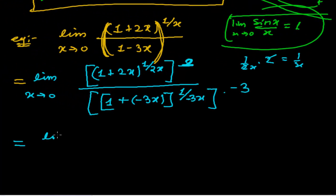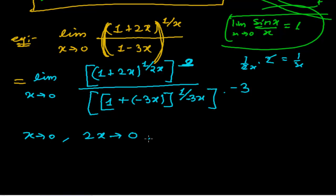Now, note that when x tends to 0, 2x will also tend to 0, and minus 3x will also tend to 0. Because x means not exactly 0, but almost, very close to 0 — so of course 2x will be almost 0, and minus 3x will also be almost 0.